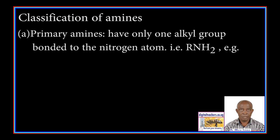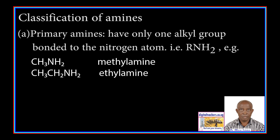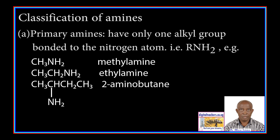A. Primary amines have only one alkyl group bonded to the nitrogen atom, that is R-NH2, where R is an alkyl group. For example, methylamine, ethylamine, and 2-aminobutane.